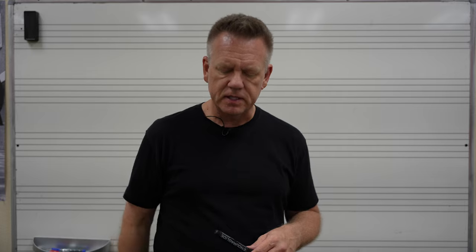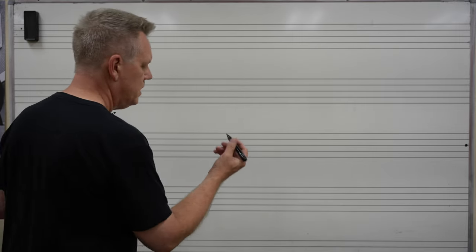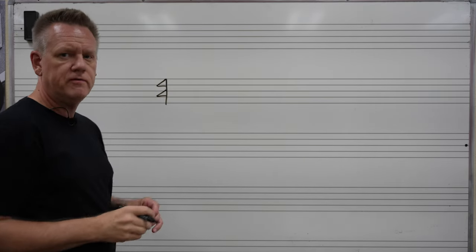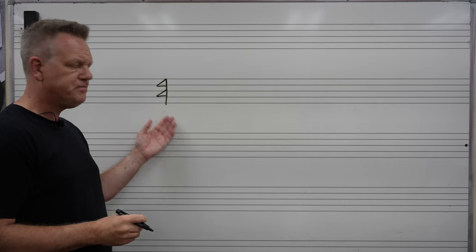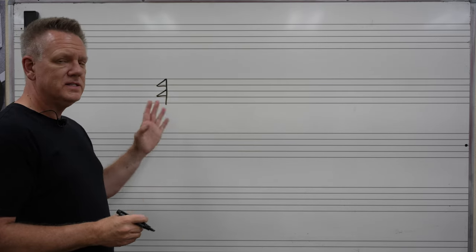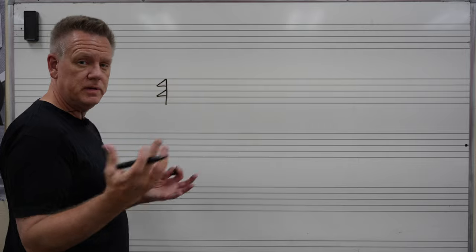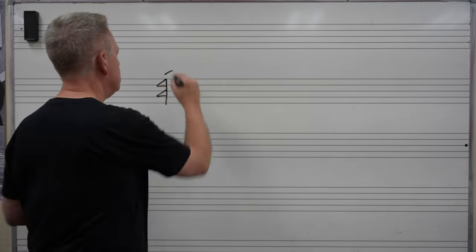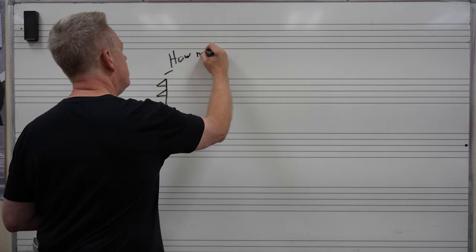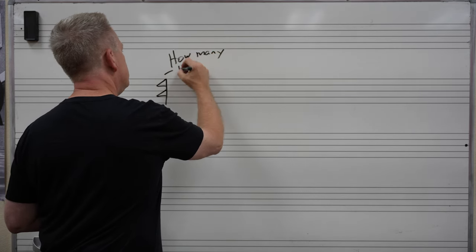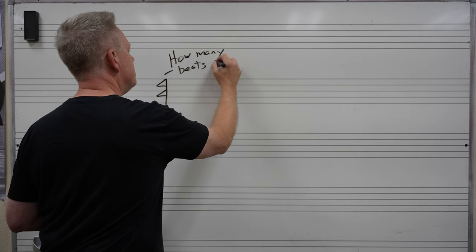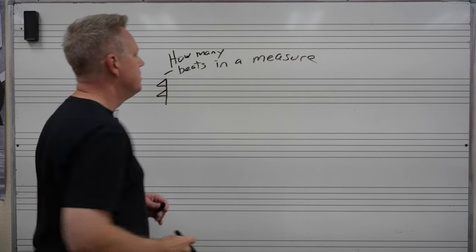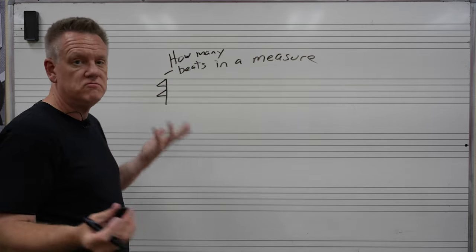Time signature. Time signature is written like this. Time signature would be a 4 over a 4. 4 over 4. What does this tell us? This tells us the top 4 - each 4 means something. The top 4 is how many. How many beats in a measure? Four. It's that simple. Four beats in a measure.